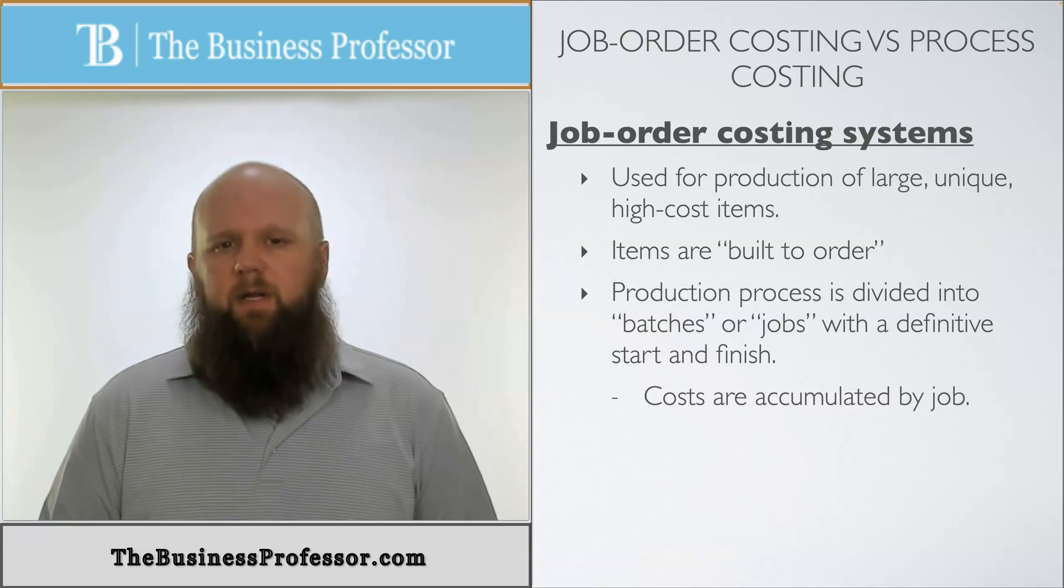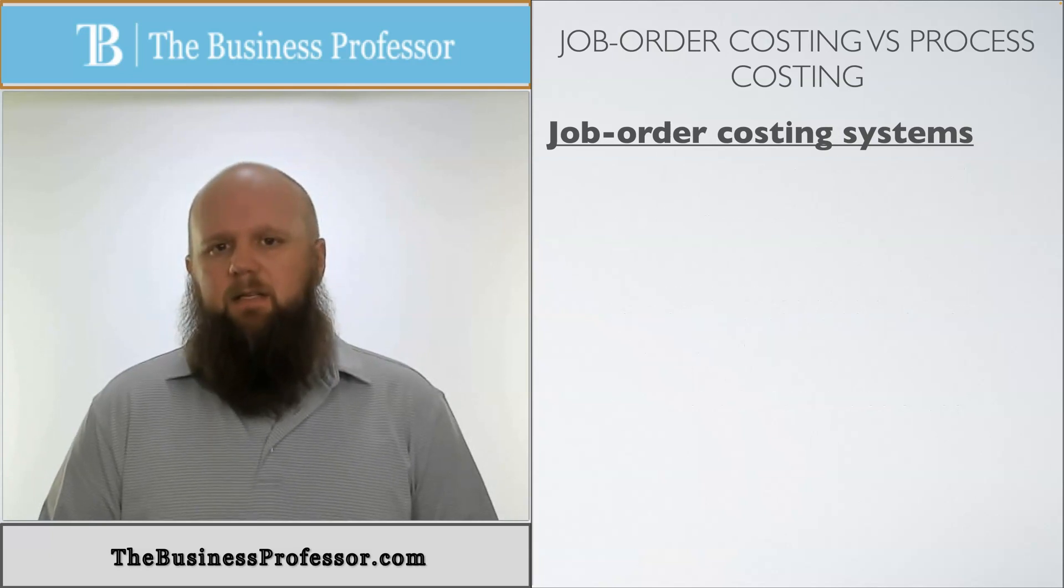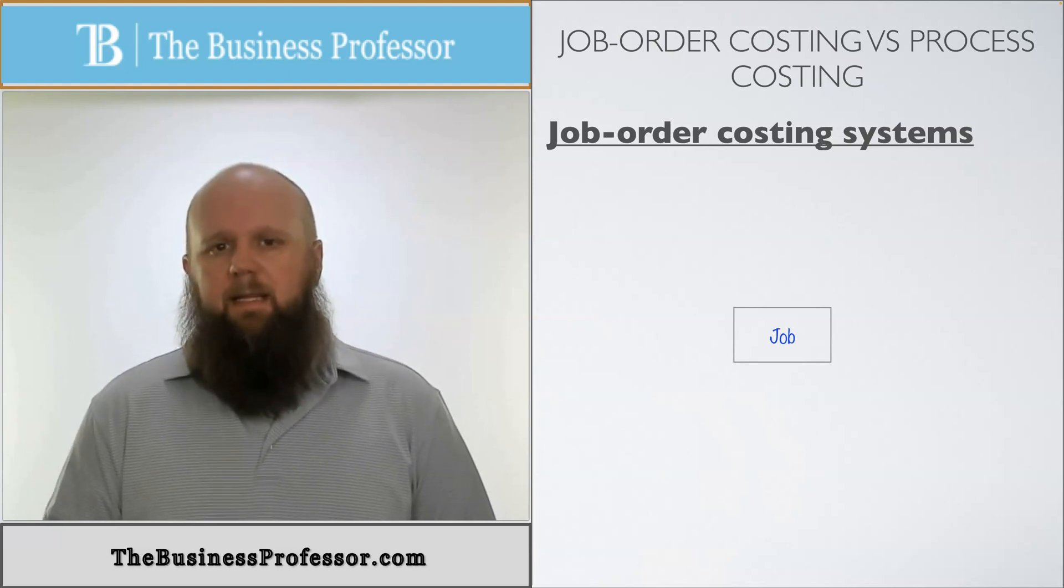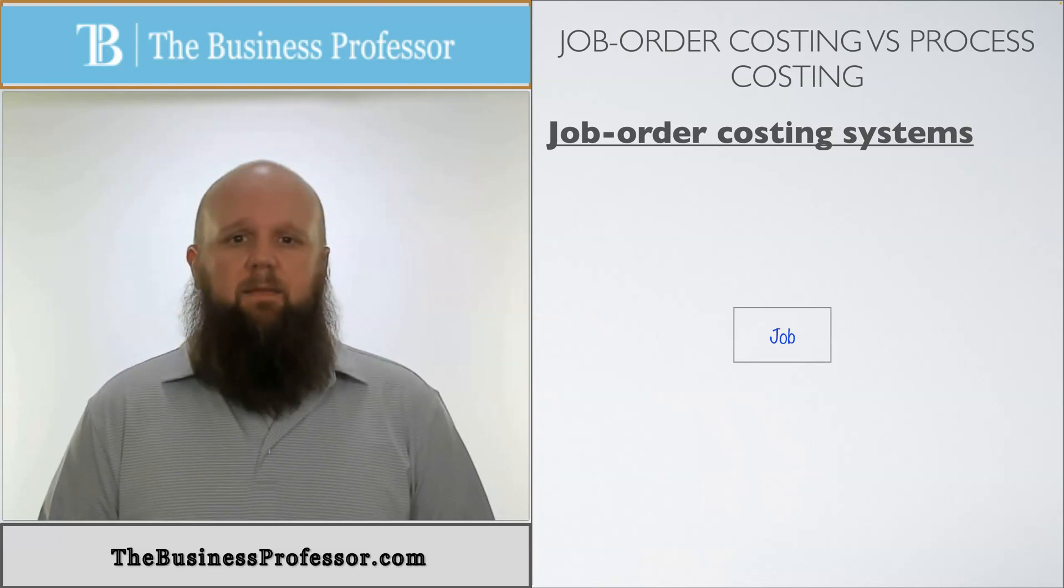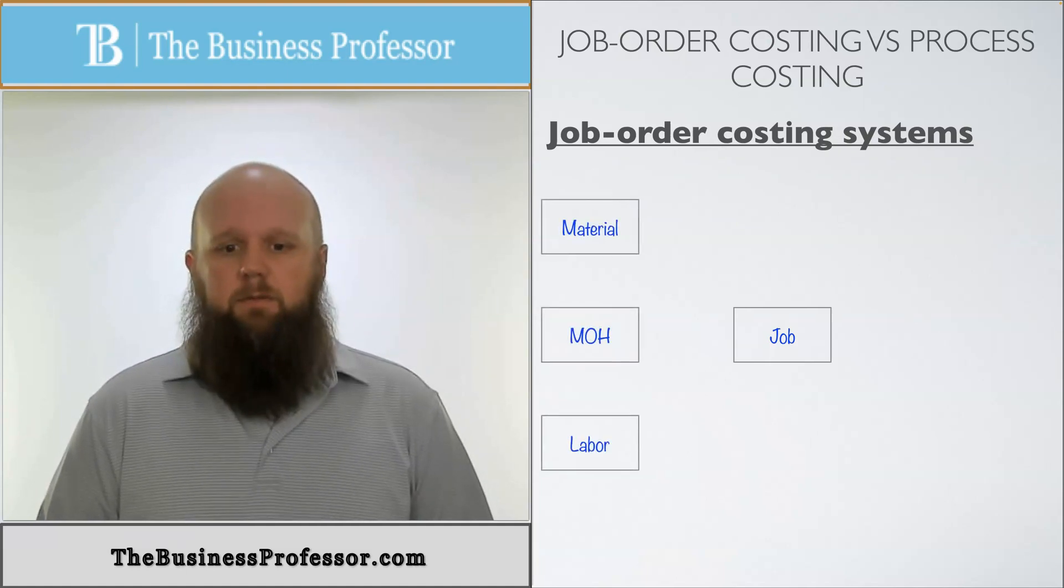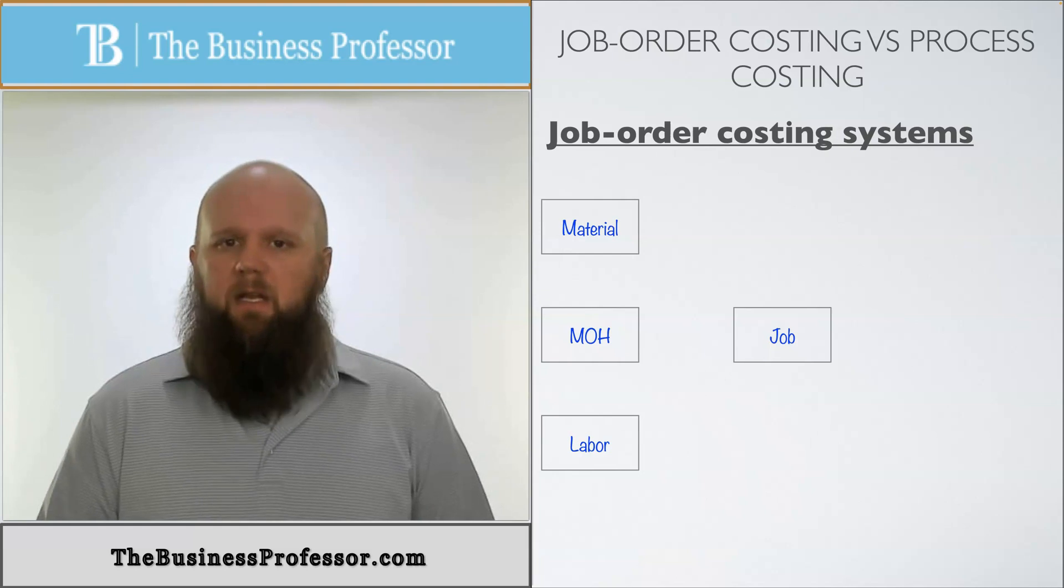If we're looking at this from an illustration perspective, let's think about it this way. We have a job, call it the house. In order to create the house, there are three things that we have to have: three product costs which are direct material, labor, and manufacturing overhead.